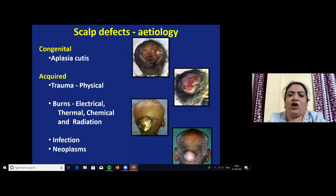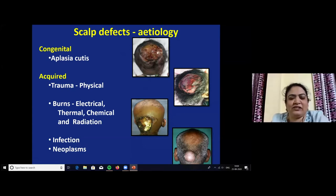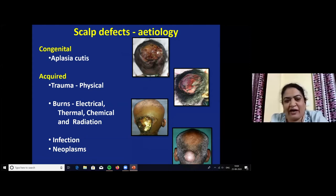The causes of scalp defects are broadly classified into congenital and acquired. The congenital cause is Aplasia cutis congenita, which may be partial or full thickness defect. Acquired causes are trauma, burns, infection, and neoplasms.